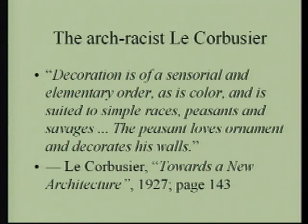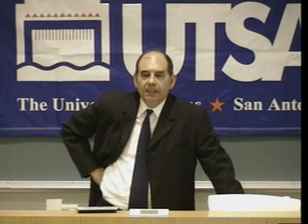Here is a statement by Le Corbusier: 'Decoration is of a sensorial and elementary order, as is color, and is suited to simple races, peasants, and savages. The peasant loves ornament and decorates his wall.' This statement is from his book, which is used as a textbook in the majority of architecture schools today all over the world. Le Corbusier was saying this as a condemnation. Who is he referring to as peasants and savages? The rest of the world? Human beings who developed ornamentation and color to give their lives some meaning?